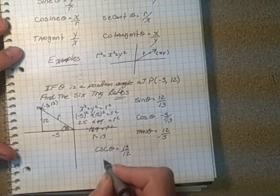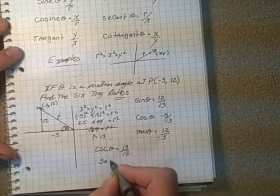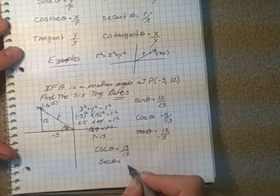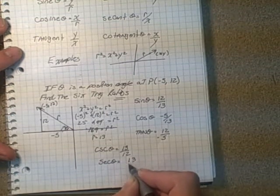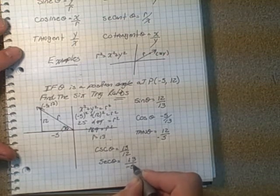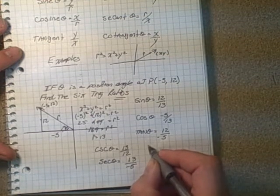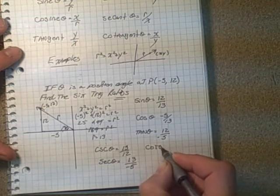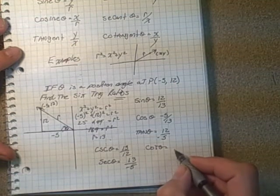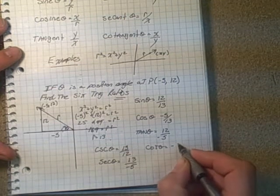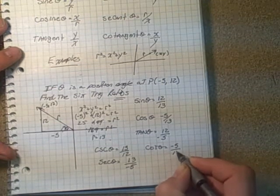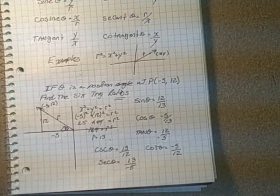And then we have secant, and that simply is r over x, x again being negative. And finally, cotangent. Cotangent is x over y. And again, x being negative. So there's our answers for our first one. I'm going to do another one here that deals with a similar type problem in this case as well.